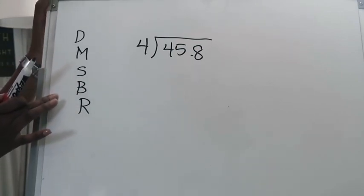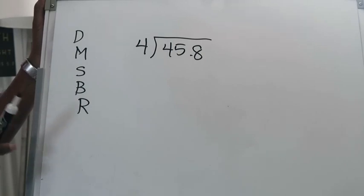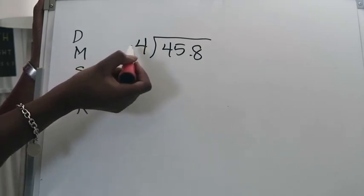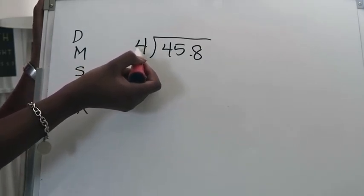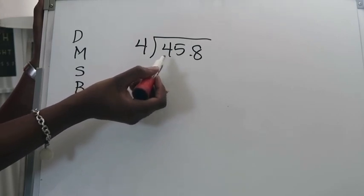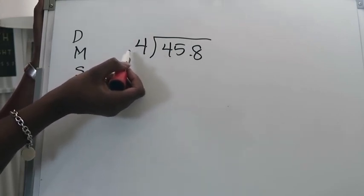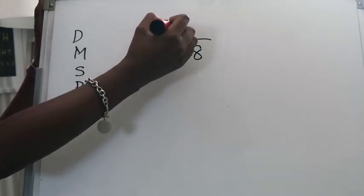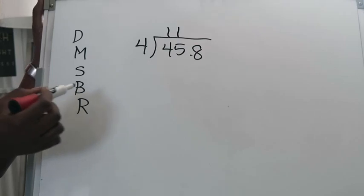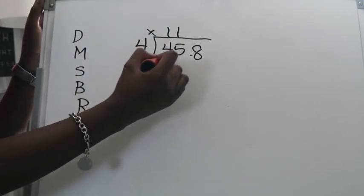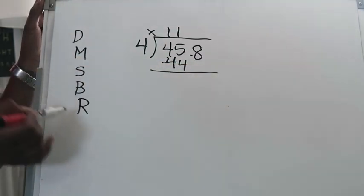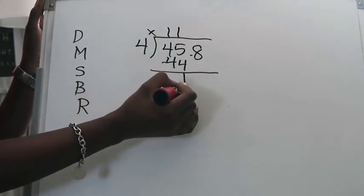So I have those off to the side so that I don't forget and then for right now I'm just going to divide this as if that decimal point isn't there. I'm going to completely ignore it right now. I know that 4 can go into 45 a total of 11 times. So I'm going to multiply 11 times 4 which is 44.